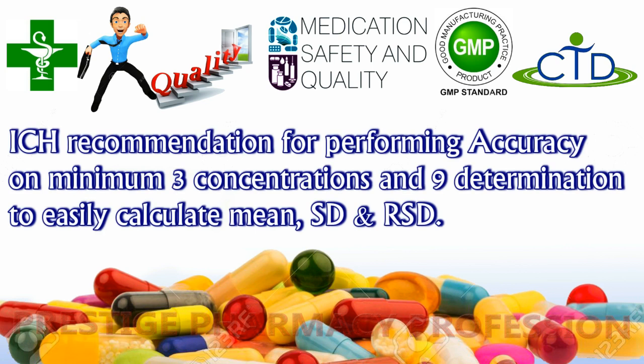According to the ICH document on validation, it is recommended to perform accuracy studies in triplicate at different concentrations, totaling nine determinations. The reason is to easily calculate the mean value, standard deviation, and relative standard deviation.